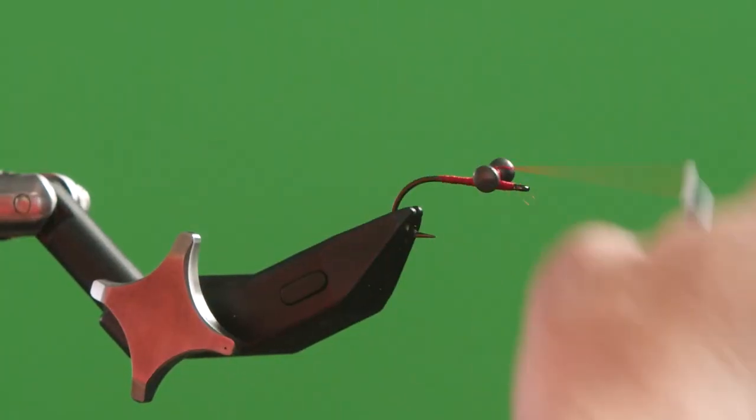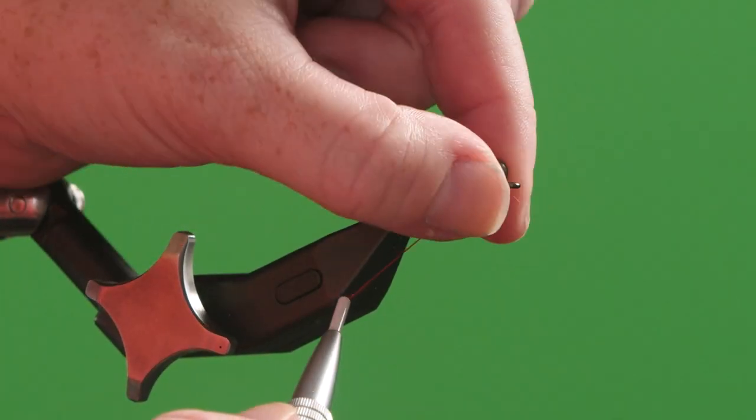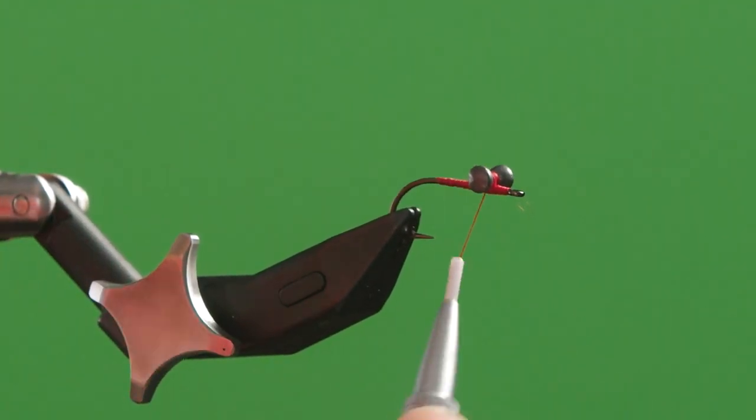Then I'm going to go the opposite direction and alternate wrapping back and forth over the eyes themselves. Make sure you wrap probably a dozen times each direction.